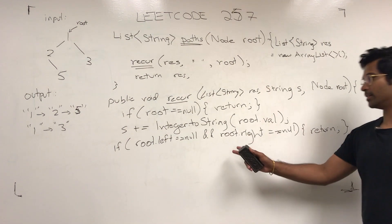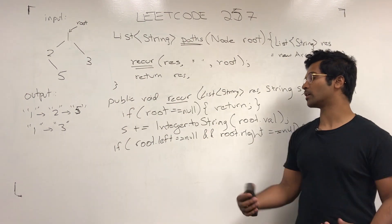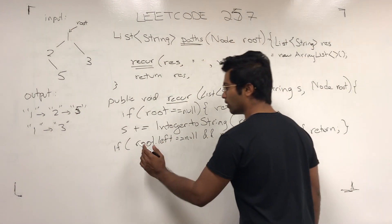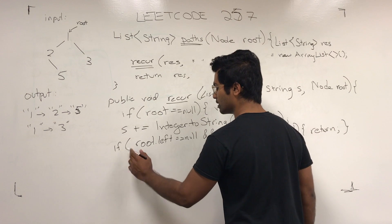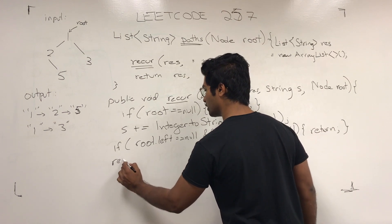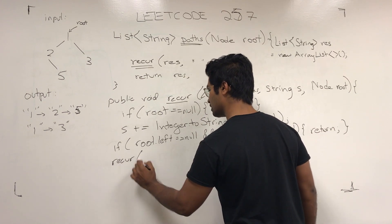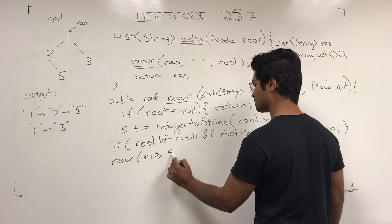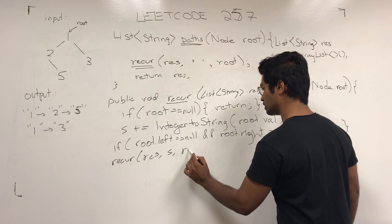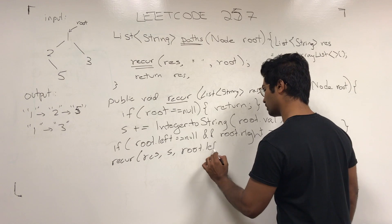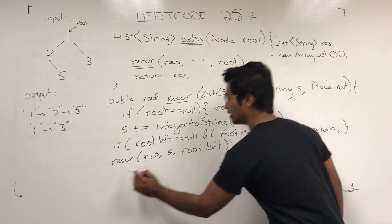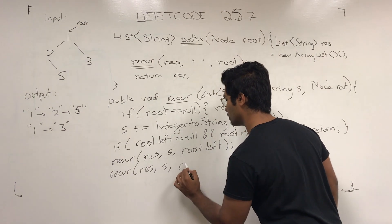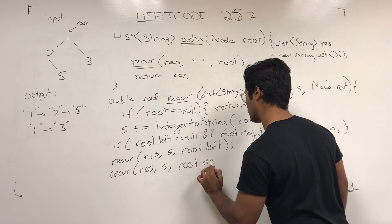If there exists even one child which is not null, then what we're going to do is recursively call each one. So it's going to be recur(res, s, root.left) and recur(res, s, root.right).